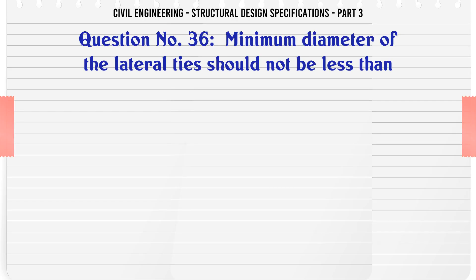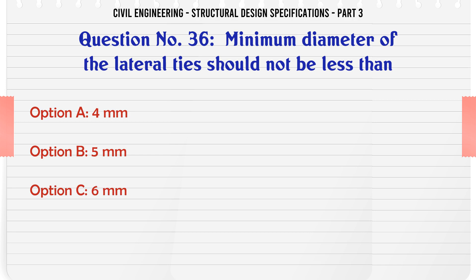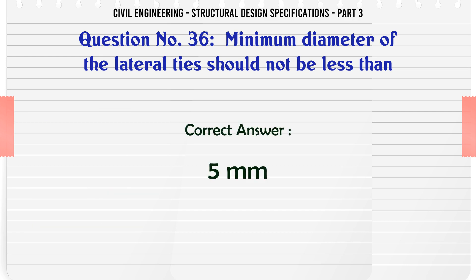Minimum diameter of the lateral ties should not be less than: a. 4 mm, b. 5 mm, c. 6 mm, d. 10 mm. The correct answer is: 5 mm.